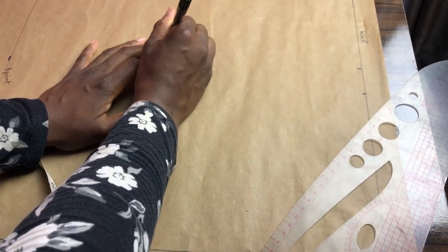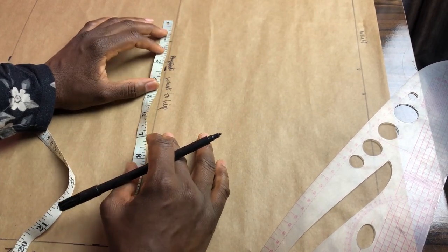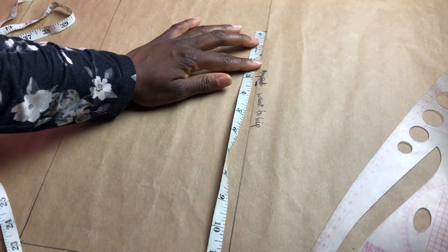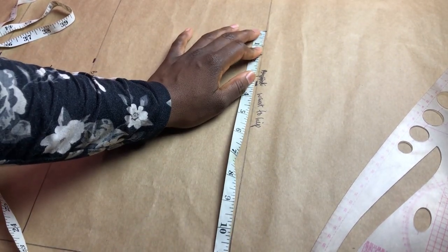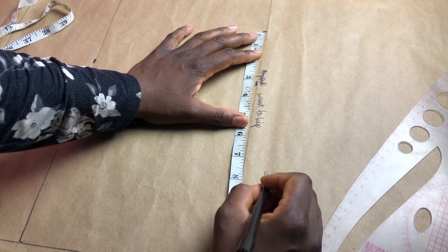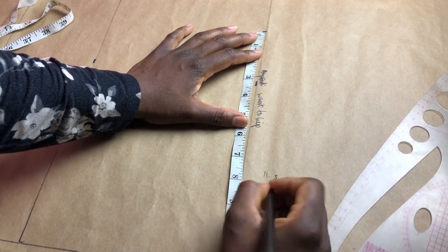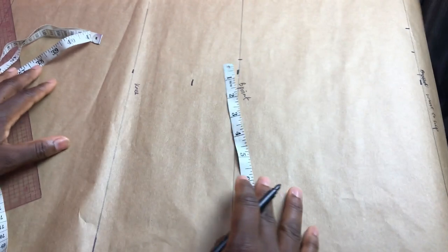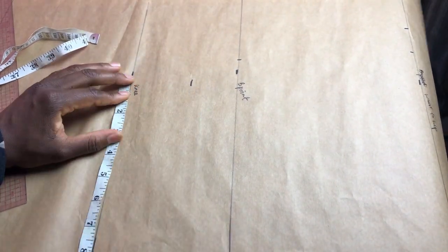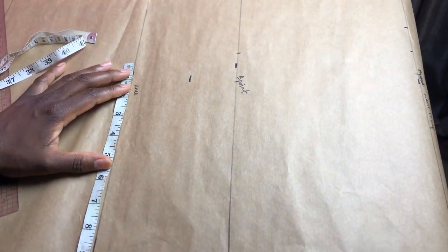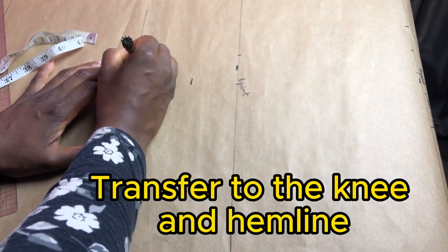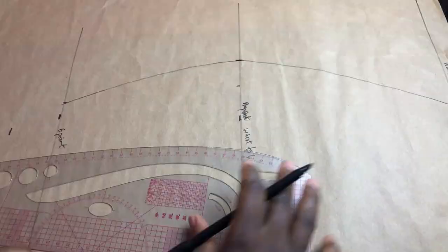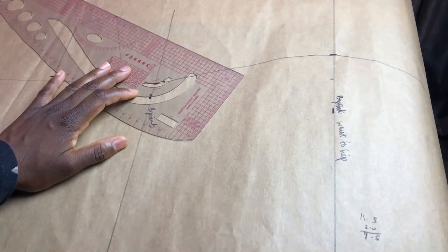Next mark your hip measurement divided by 4 plus your sewing allowance on the hip line. Measure what you have on the hip line including the sewing allowance and subtract 2. This is what you mark on the breaking point line. I have 11.5 on the hip minus 2 equals 9.5 and I'll mark that here. Now transfer that exact measurement to the knee and the hem line. Now connect from the waist to hip, then to the breaking point and hem.